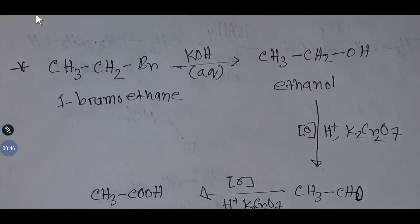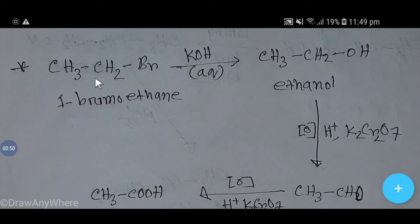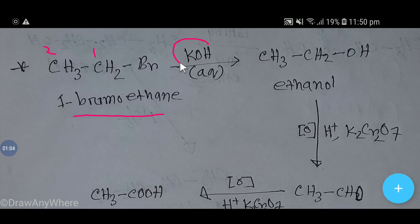First, 1-bromoethane will react with aqueous potassium hydroxide. The bromine will be replaced by the OH from potassium hydroxide, and we will get ethanol — this product is an alcohol, specifically ethanol.